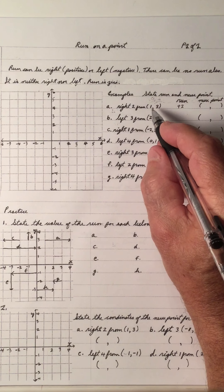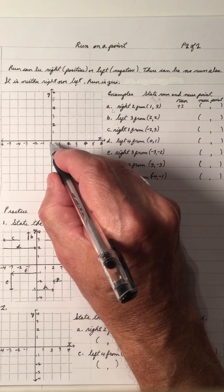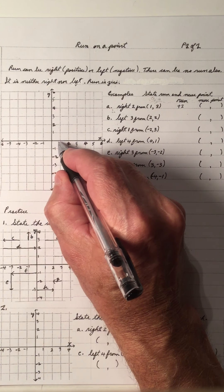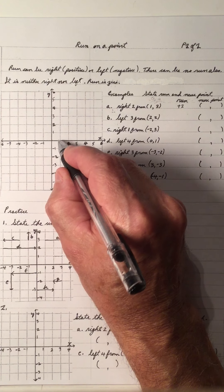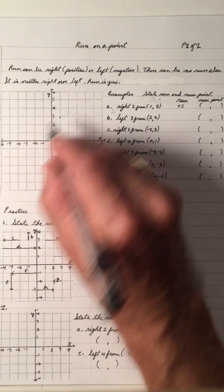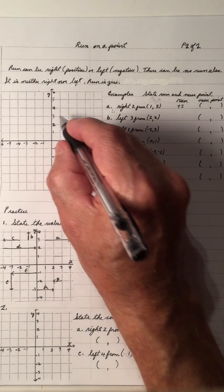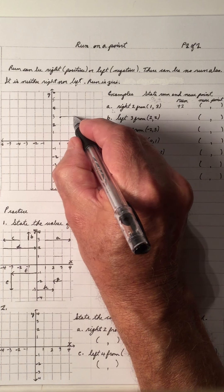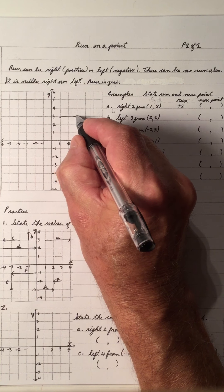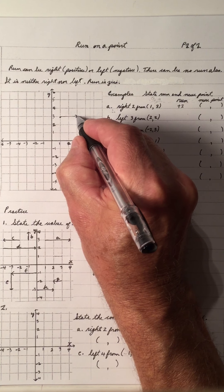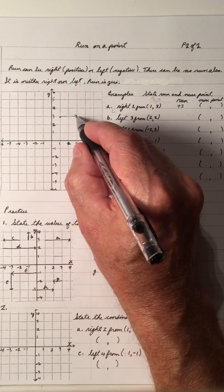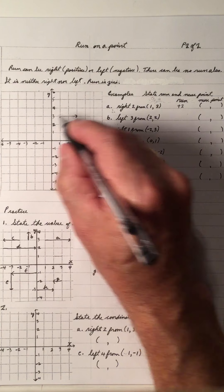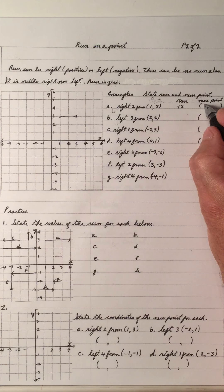So the point (1, 3): start at (0, 0), go one to the right and three up — there's the point (1, 3). And we're going right two. So this new point: x is three, y is three.